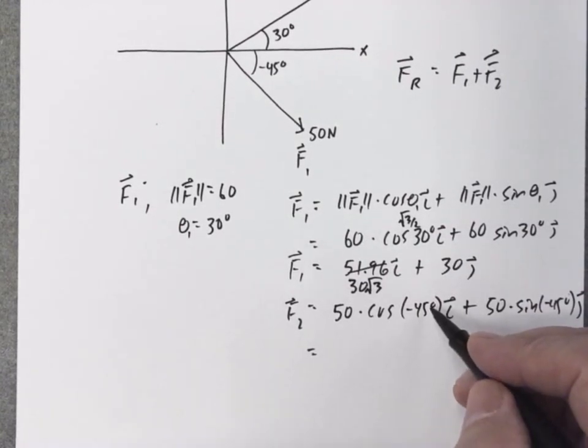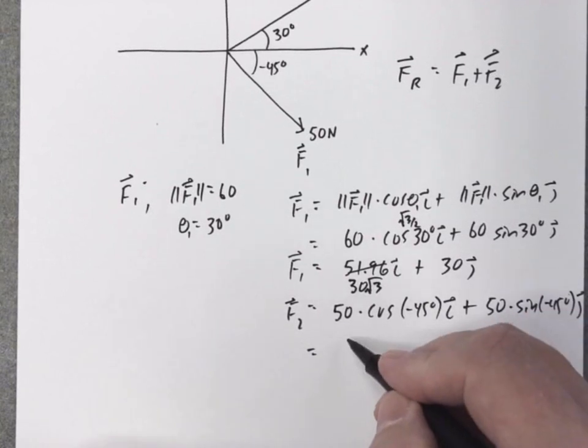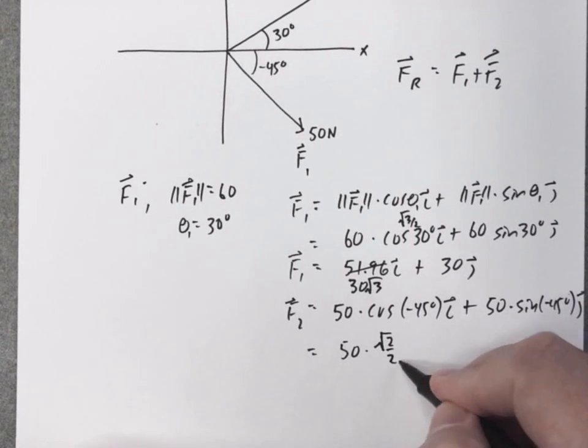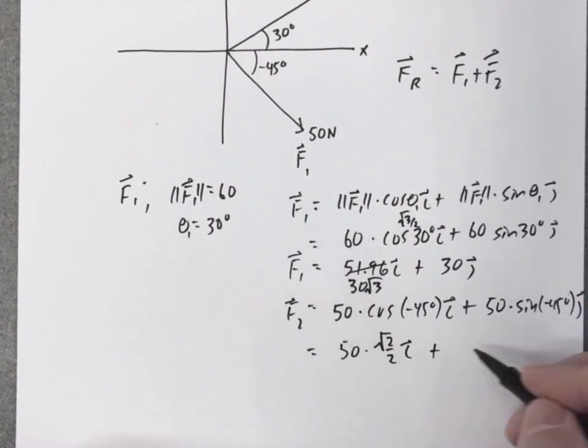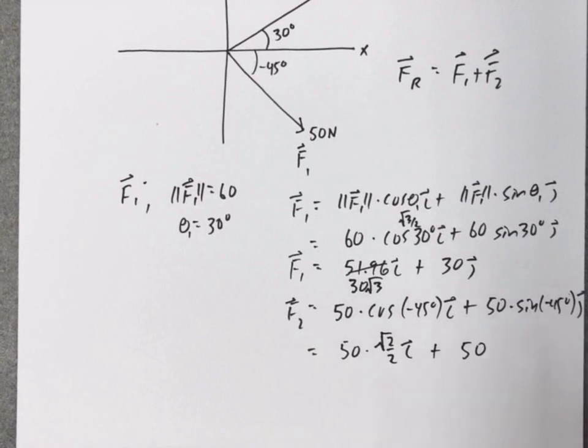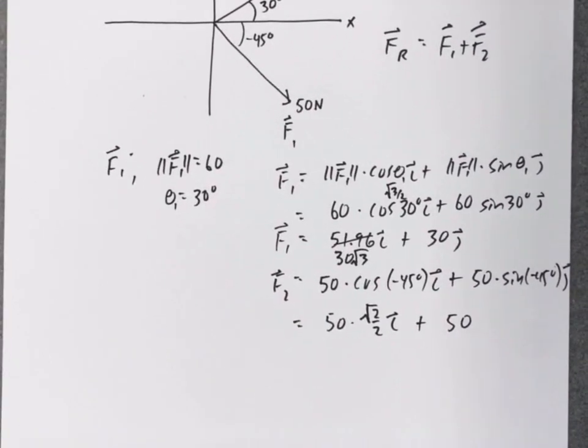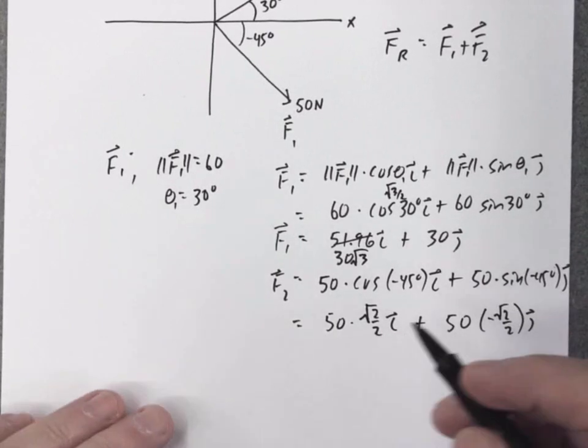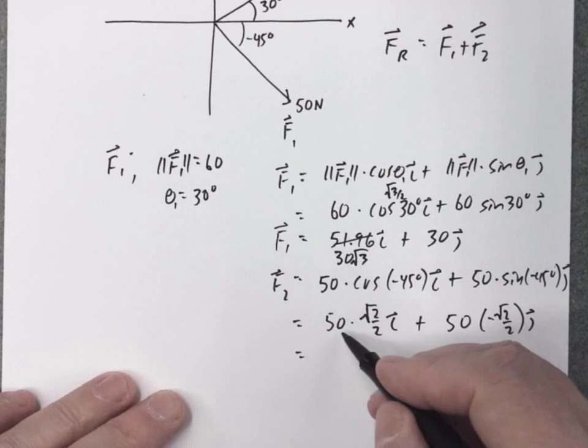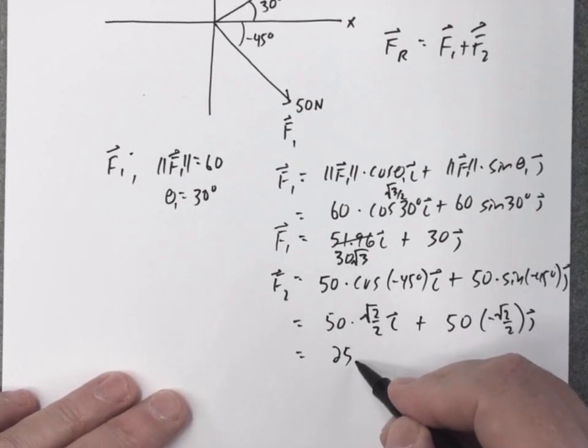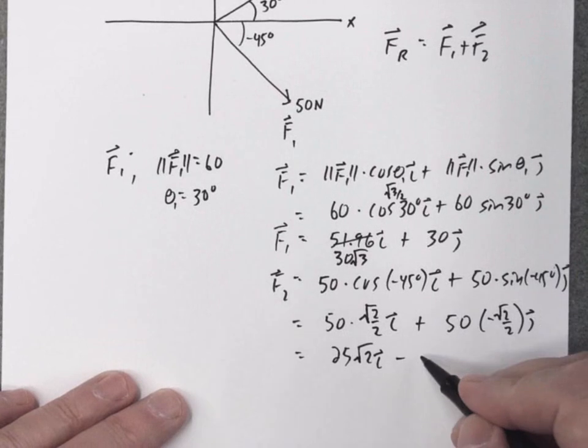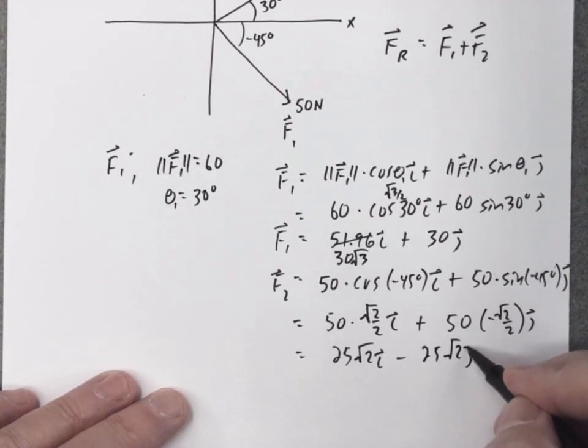Cosine of negative 45 degrees is square root of 2 over 2. So 50 times square root of 2 over 2, I, times 50. The sine of negative 45 degrees is negative square root of 2 over 2. So this is going to be 25 square root of 2, I, minus 25 square root of 2, J.